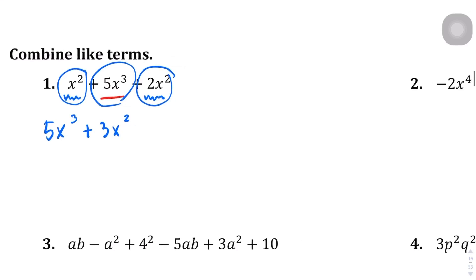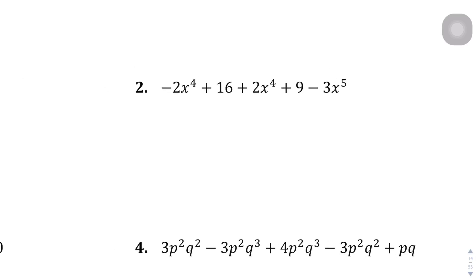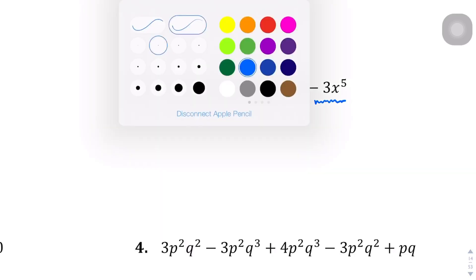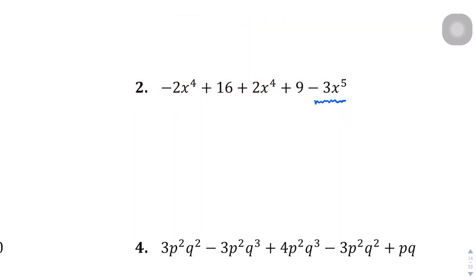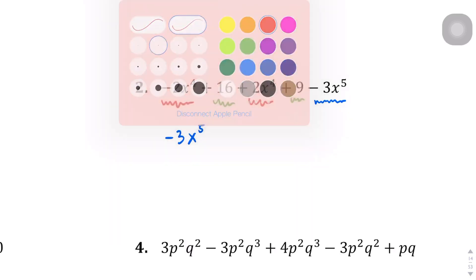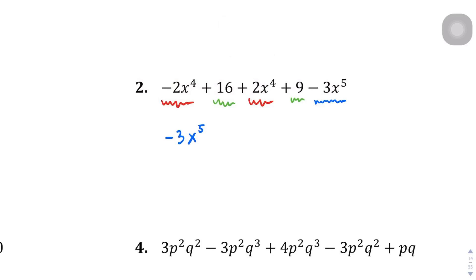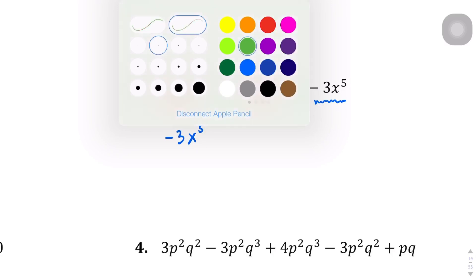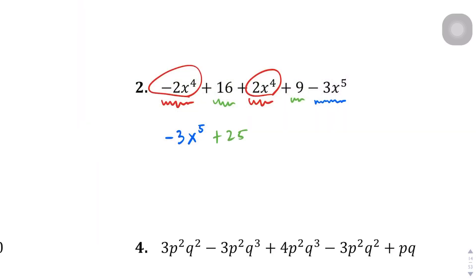Question two: there's an x⁵ term with nothing to combine, so we rewrite it as negative 3x⁵. For the x⁴ terms, we have negative 2x⁴ and positive 2x⁴ — they cancel out to zero, so nothing to write. Finally, combining the constants: 16 plus 9 gives 25. The simplified expression is negative 3x⁵ + 25.